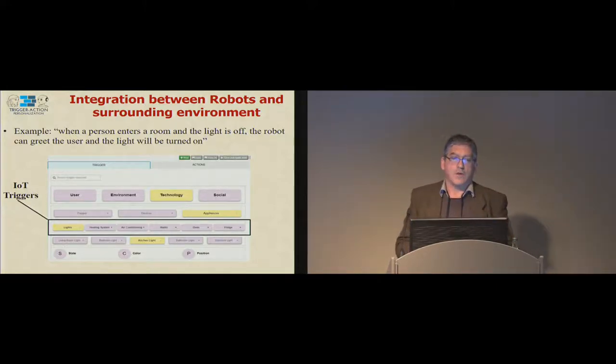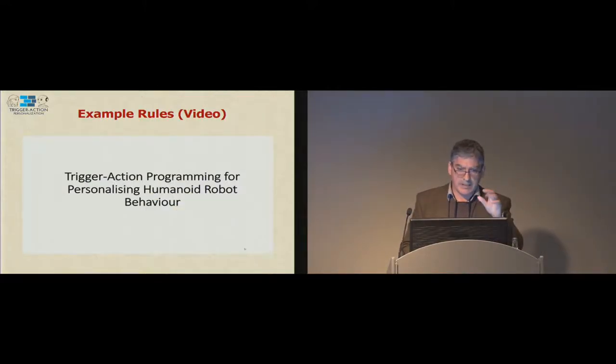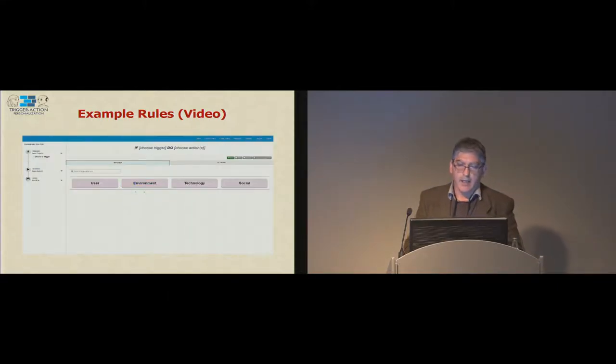It's possible also to specify triggers that are related to events of objects that are nearby. For example, lights, heating system, oven, fridge, and so on. We can connect these two worlds. We can say when a person enters a room and the light is off, then please, the robot should greet the person and then the light should change, should be on to a specific color. Just to give an idea about how it works.